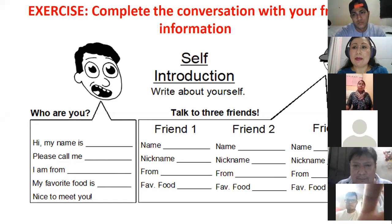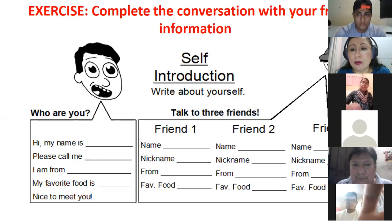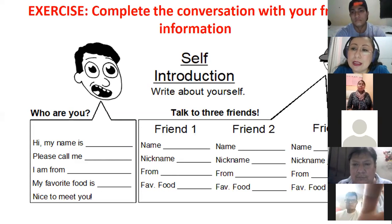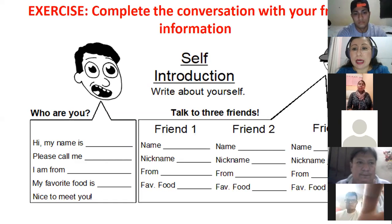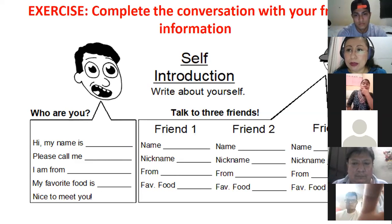Then we come back to the plenary — después regresamos a la plenaria. There's voluntary participation from some groups. Because of the time, not always will we all be able to participate. Como somos un grupo bastante grande, no siempre todos vamos a poder participar de la plenaria. Pero la idea es que haya siempre equipos voluntarios. Si no, seleccionamos al azar two or three teams to participate.